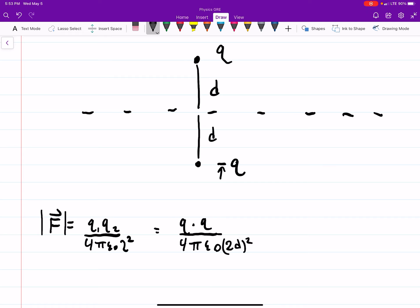2D squared. So that's q squared over, well that will give me a 4 when I square the 2, so 16 pi epsilon naught d squared.